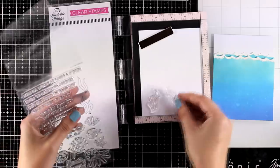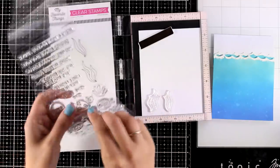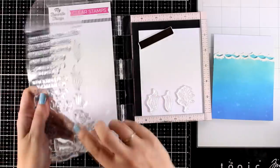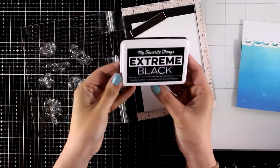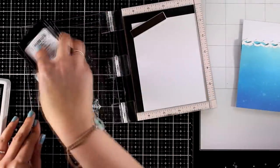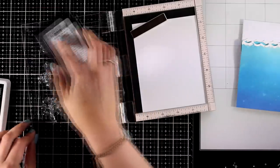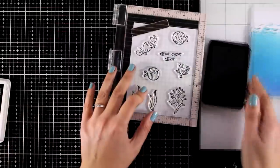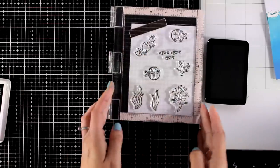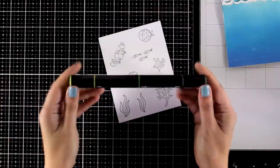Using stamps from the Best Fins stamp set, this is a new stamp set from the June release by My Favorite Things. I'm gonna stamp all the images with Black Extreme ink by My Favorite Things. This is an alcohol friendly ink so it's not going to smudge or smear since I'm planning to use my alcohol markers.